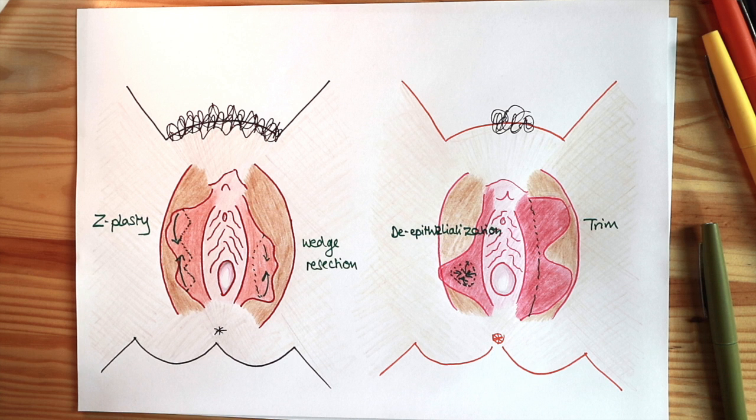There's several different techniques that can be used, but it basically means removing part of the labia minora and sewing it back together.